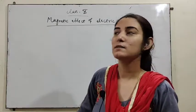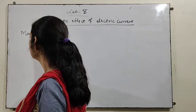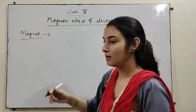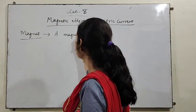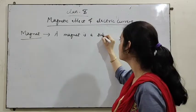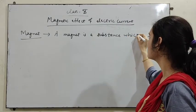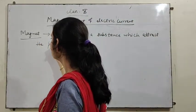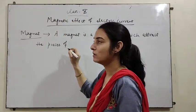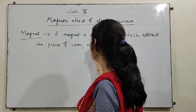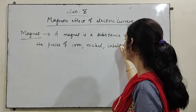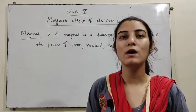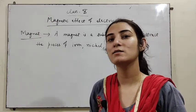In this chapter the basic term is magnet. What is a magnet? A magnet is a substance which attracts the pieces of iron, nickel, cobalt etc. This is known as magnet.